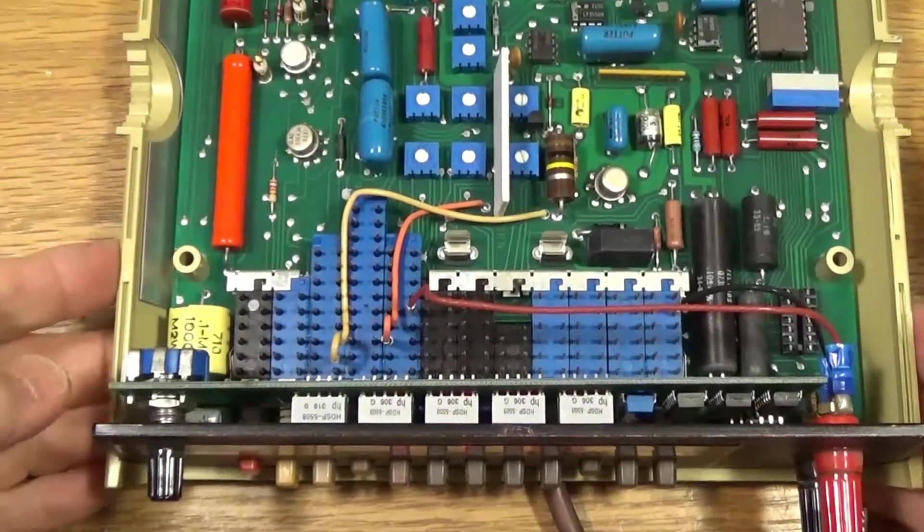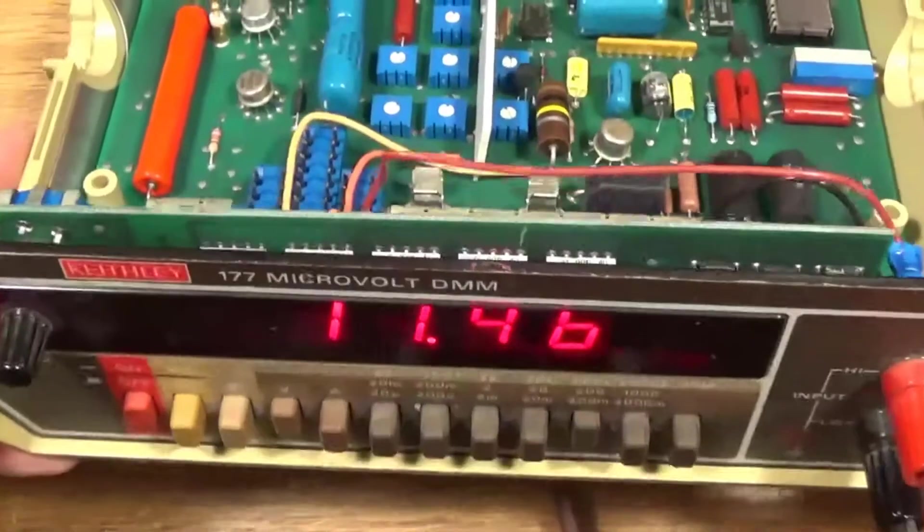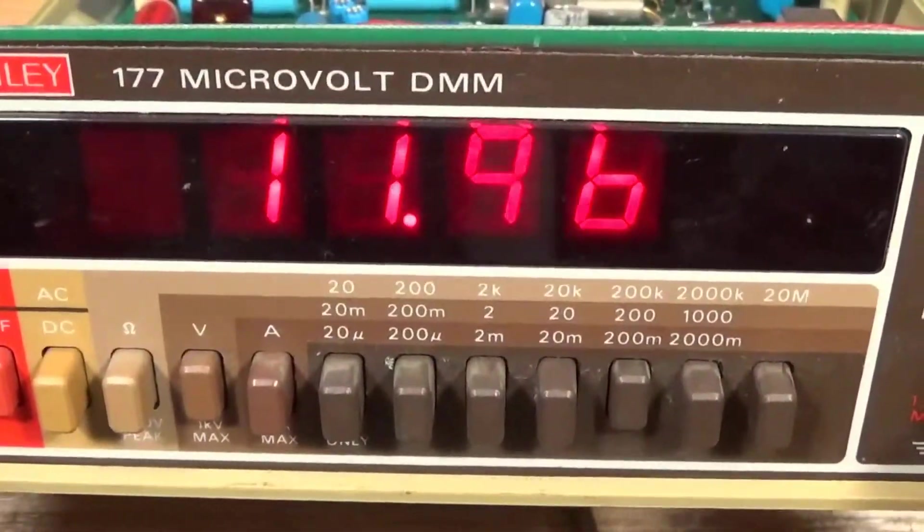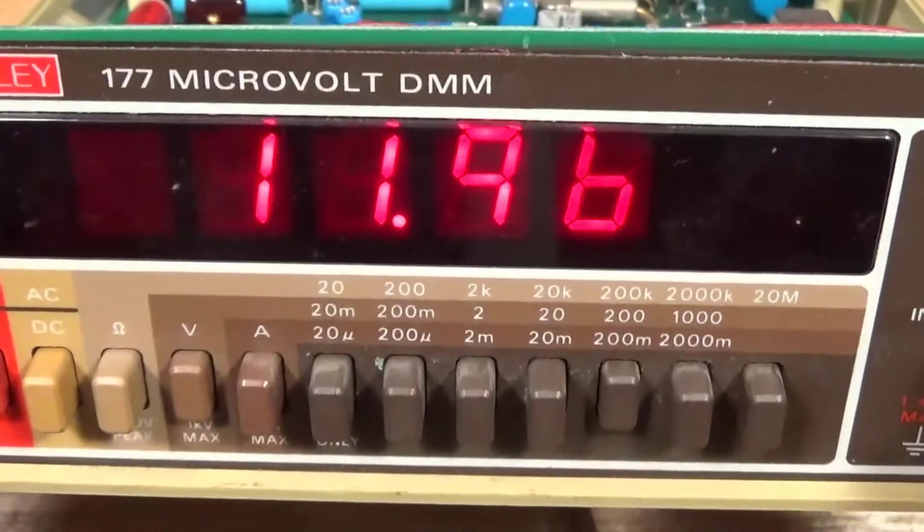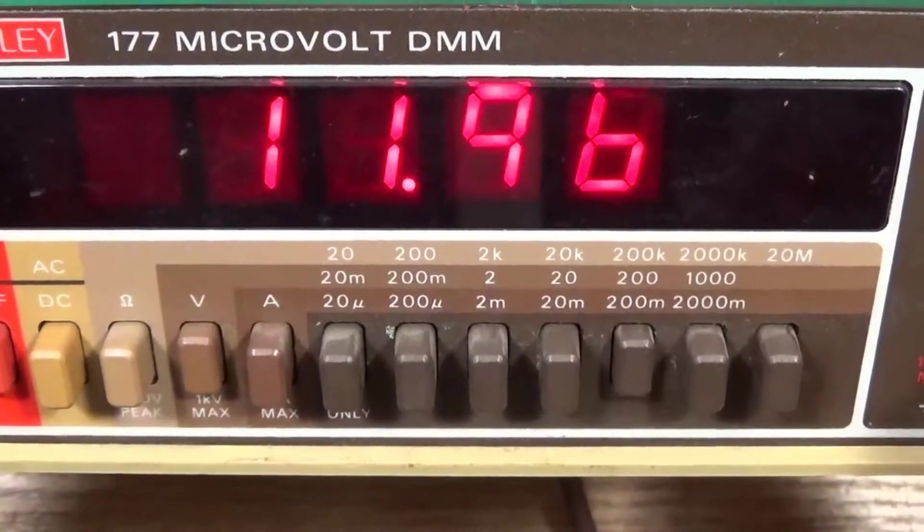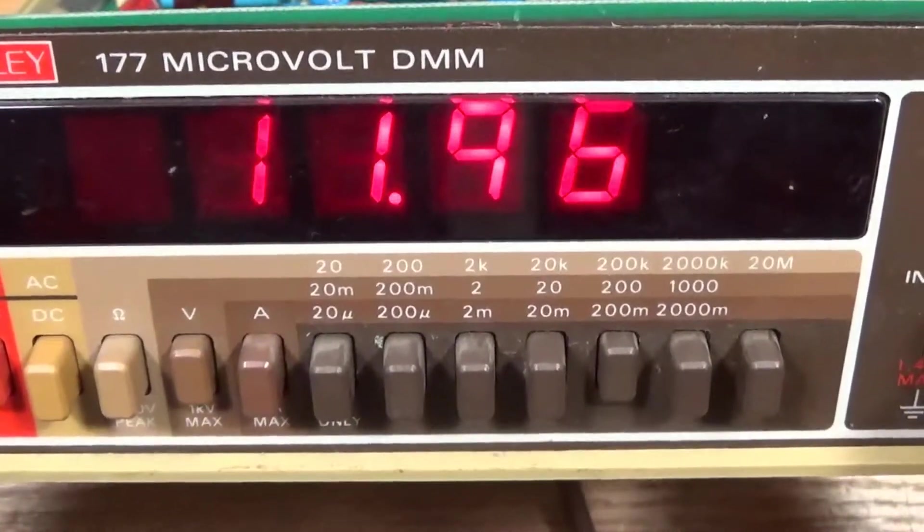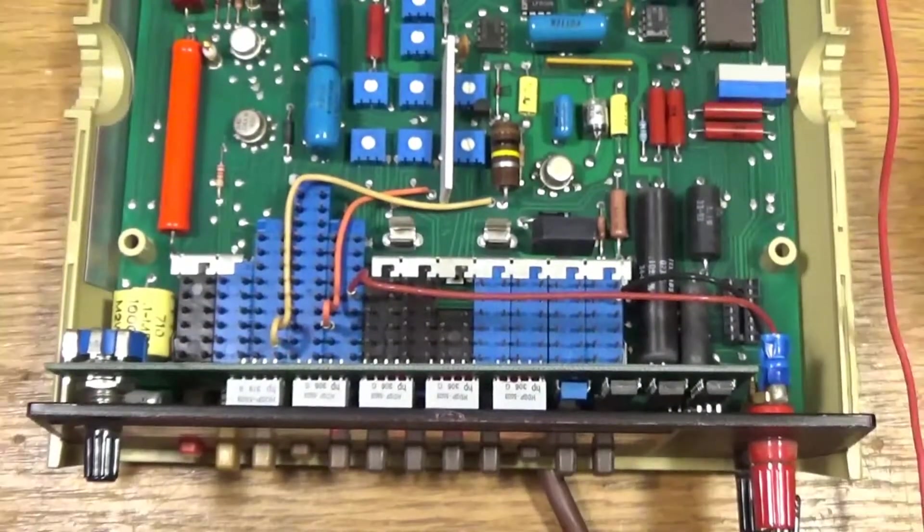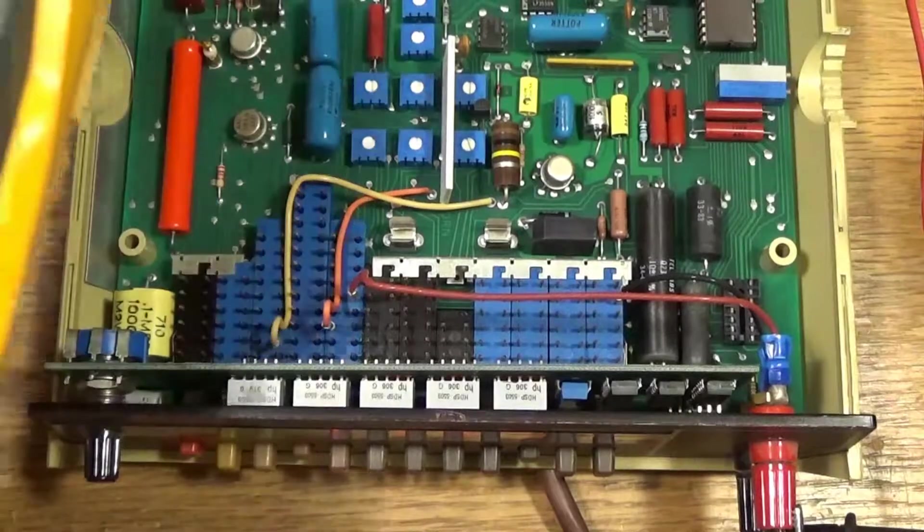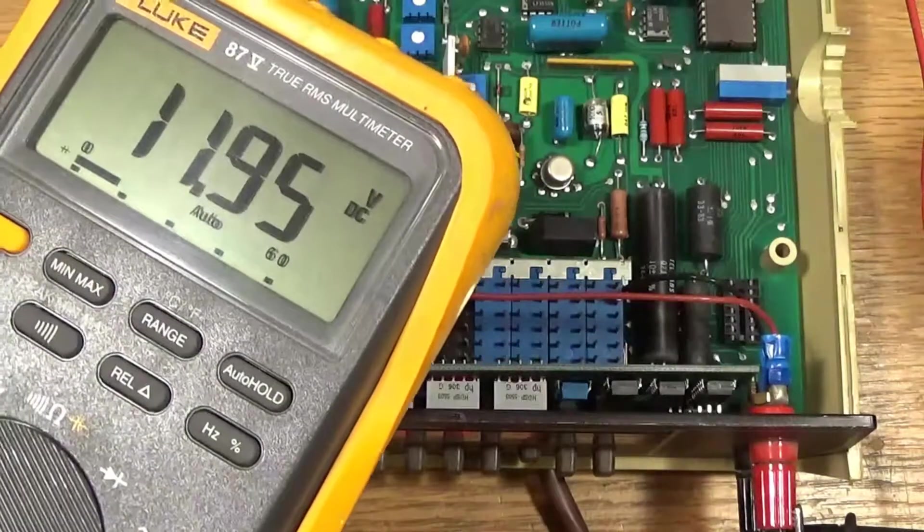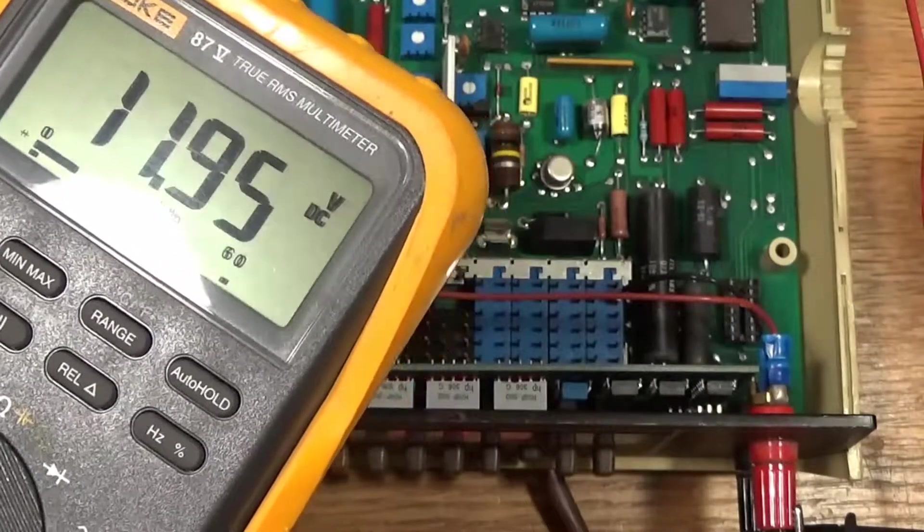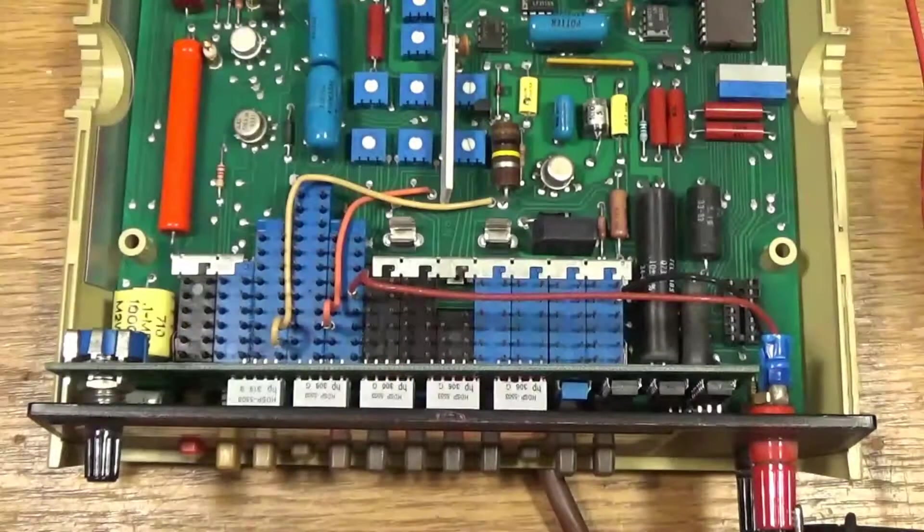So I just hooked up my bench power supply to it and it's set to about 12 volts. There we go, 11.96. That's kind of what I'm reading on my power supply. I'll check this against my Fluke meter here. So here's my Fluke meter: 11.95 volts. I would say that this meter is now working.